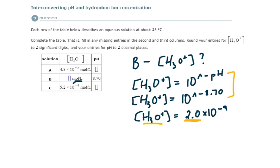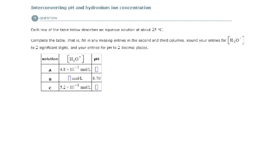When you're putting this into the calculator, you can hit the second button and then the log button, and that'll give you the anti-log, or you can just type it in as 10 to the negative pH value. So let's take a look at the last solution, solution C.